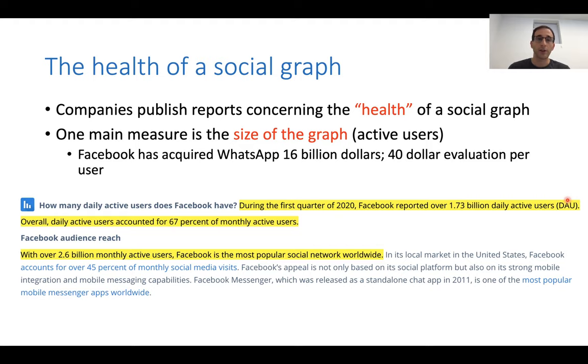It's very important to keep track of the health of a social graph. Companies public reports with different measures about the health of their networks. We're going to talk about a few measures, but one main one is just simply the size of this graph or network. So this is the number of nodes in the network, the number of active users. For example, Facebook has acquired WhatsApp for the steep price of $16 billion. And this was computed by a $40 evaluation per user. You can see here from Facebook's report of this year that they reported that they have over 1.73 billion active daily users and 2.6 billion monthly active users.